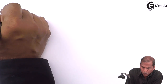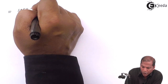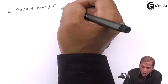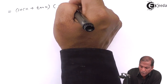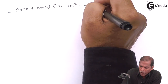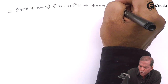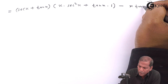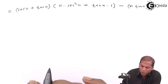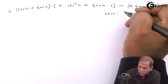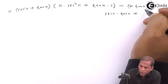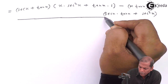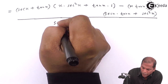The next step: we write sec(x) plus tan(x) as it is, then into x as it is, into the derivative of tan(x) which is sec²(x), plus tan(x) as it is, into the derivative of x which is one. Then minus x times tan(x) as it is, into the second bracket: sec(x) times tan(x) plus sec²(x), and the whole thing divided by sec(x) plus tan(x), the whole squared.